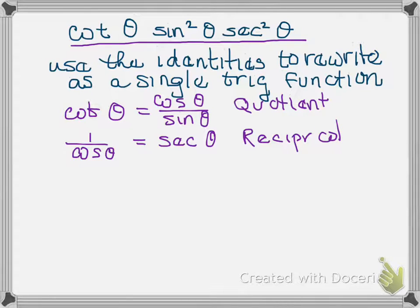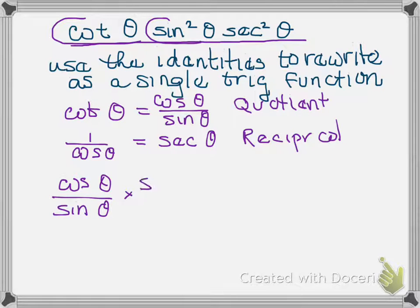So if we put this all together, let's do some substitution. Instead of cotangent, I'm going to write cosine of theta over sine of theta and that gets multiplied by sine squared of theta and I'm going to put that over one just so I keep everything aligned. That gets multiplied by secant squared of theta. But remember that secant is one over cosine so I'm going to replace secant squared with one over cosine squared.